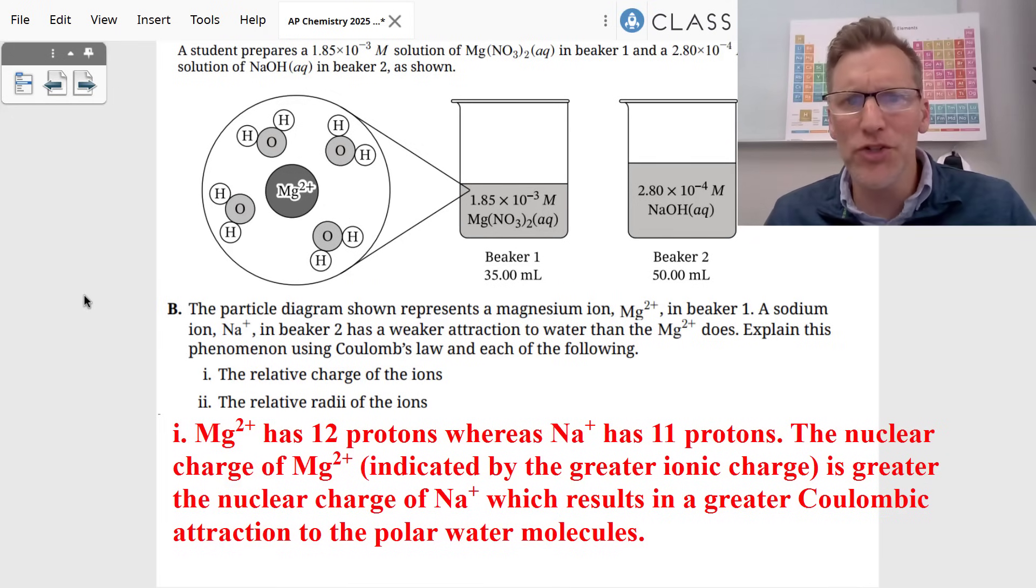It moves us on to dissolving magnesium nitrate in water. You can see it says that the magnesium plus two is being attracted by the polar water molecules, and they're going to Coulomb's law that force equals KQQ over R squared. And the first thing they wanted to know was why did magnesium plus two have a greater attraction to the water than the sodium plus one? And first, they wanted you to explain it with relative charge of the ions. Well, magnesium has a positive two charge. Sodium has a positive one charge. Where does that positive charge come from? It comes from the nuclear charge, the number of protons.